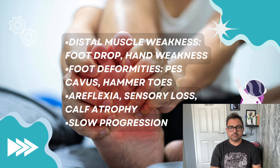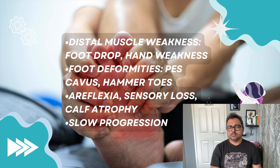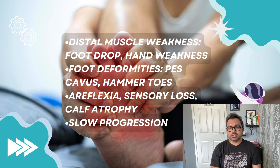Charcot-Marie-Tooth Disease may present with weakness of distal muscles such as foot drop. Foot deformities like pes cavus and hammer toes may also be present, and the progression is very slow. On clinical examination, you may find sensory loss, atrophy of the calf muscles, and areflexia.